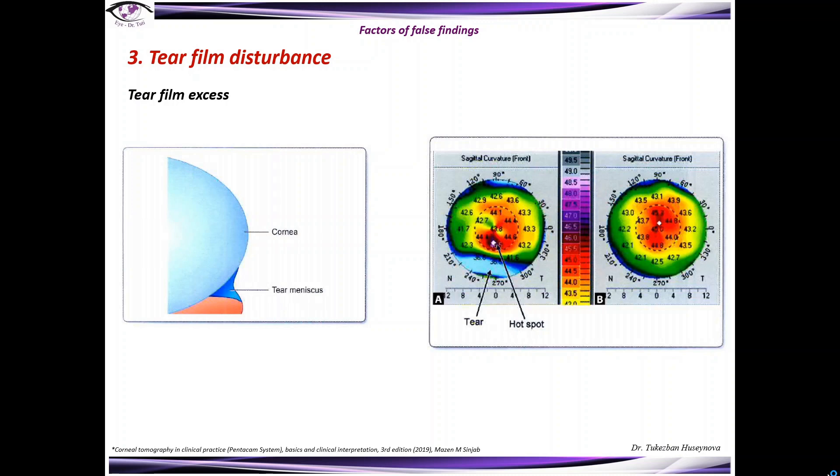Tear film excess. The common sign of tear film excess is blue meniscus on the corneal periphery inferiorly. Here you can see clearly the excess tear situation below, and this is a normal situation.